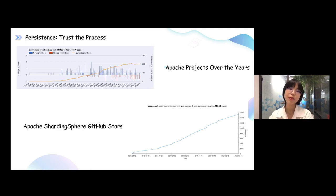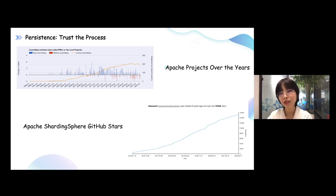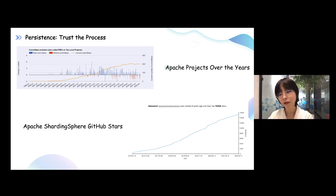The next part is about persistence. Persistence wins the trust process. From the history of Apache Foundation — at the beginning they were so small, just a group of people, but now they have more than 300 wonderful projects. For Apache ShardingSphere, we started with zero stars on GitHub but now have more than 16,000 stars. That's the power of the process, of persistence. If you believe in your projects, want to become diverse, and want to become better in the future, then you need to learn how to be patient with time.